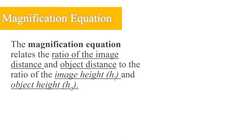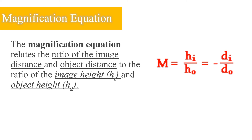The magnification equation relates the ratio of image distance to object distance, and the ratio of image height to object height. The formula is: M = HI/HO = −DI/DO, where M is the magnification, HI is the height of the image, HO is the height of the object, DI is the image distance, and DO is the object distance.